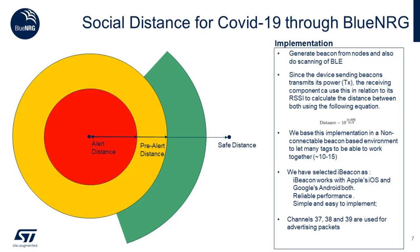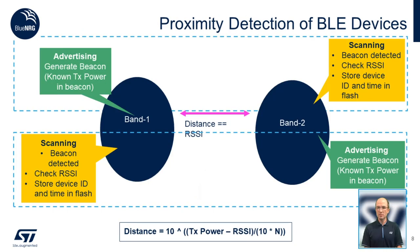Social distancing through Bluetooth LE can be achieved through beacons and scanning of Bluetooth LE nodes. Since the device sending the beacon advertises its transmit power, the receiving component can use the data in relation to its RSSI to determine the distance between both of them using the path loss equation. This implementation is based on a non-connectable environment to let as many tags as possible work together. In this reference design, we decided to use iBeacons since they are simple to implement, with reliable performance, and they are able to run on iOS and Android. We are using channels 37, 38, and 39 for advertisement.